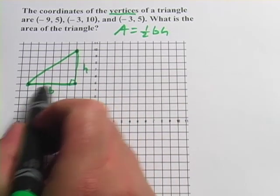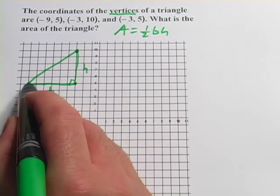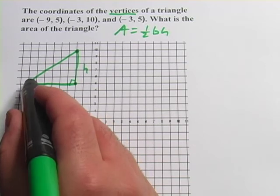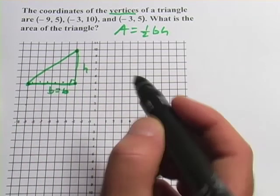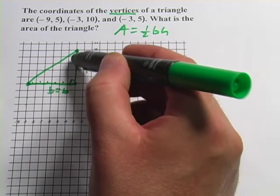And if we want to know how long they are, we just have to count the units. Each of these squares represents a unit. So 1, 2, 3, 4, 5, 6, the base is 6.